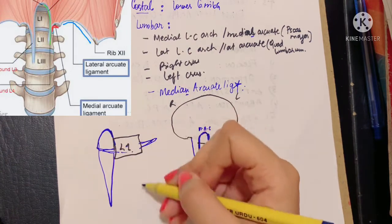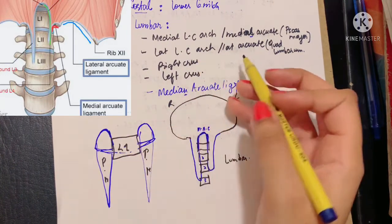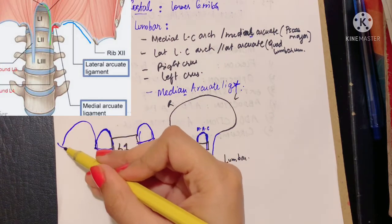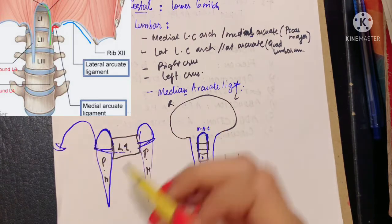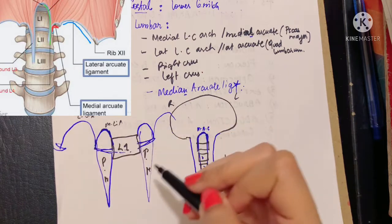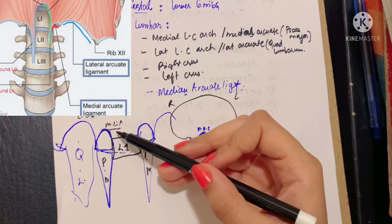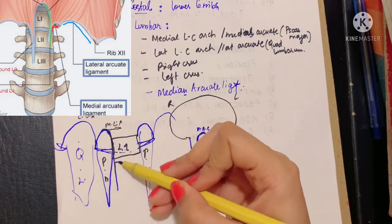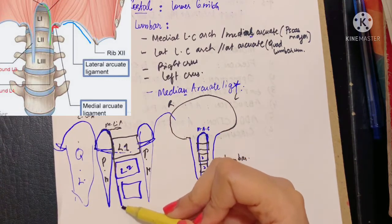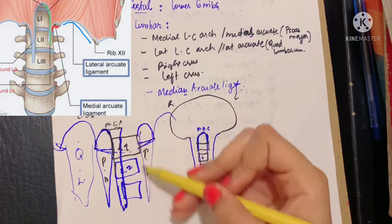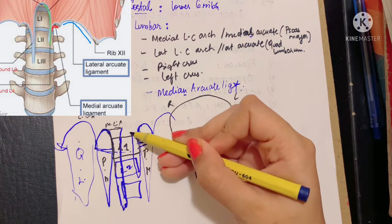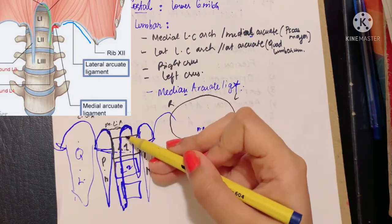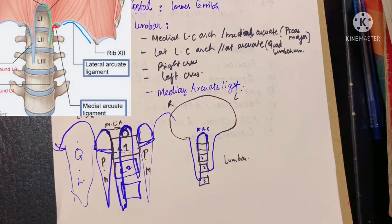The psoas major muscle lies on either side. The lateral lumbocostal arch arises from the transverse process of the L1 vertebra and attaches to the 12th floating rib, forming a more lateral arch — also known as the lateral arcuate ligament — overlying the quadratus lumborum. The medial arcuate ligament is continuous medially with the right crus attached to L1, L2, and L3, and on the left side with the left crus. The two crura join their medial fibers to form the median arcuate ligament, behind which lies the aortic opening of the diaphragm.